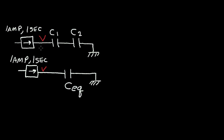Now note that as I inject this one amp for one second, I get current flow into C1 and out of C1 into C2 and out of C2 into ground. So the same current flows in C1 and C2, meaning the same charge accumulates on C1 and C2, which I'll call Q. The same thing happens to C_EQ below — I run one amp for one second and develop a charge on C_EQ. So all the capacitors receive the same charge.